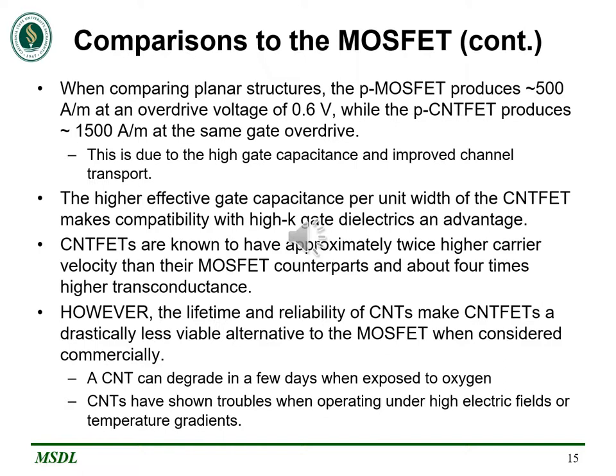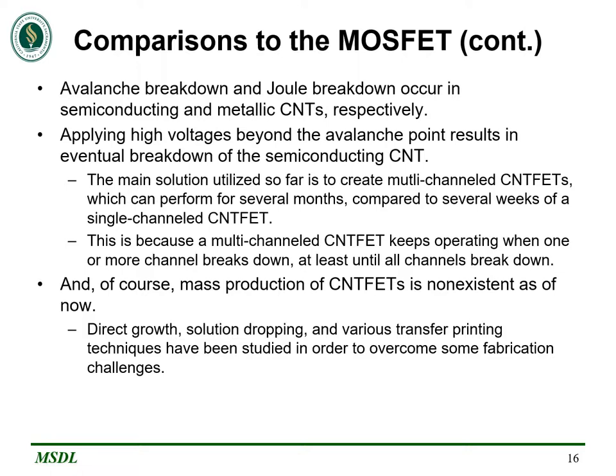A P-type MOSFET can produce around 500 amps per meter at an overdrive voltage of 0.6 volts, while a similar P-type CNT-FET can produce around 1500 amps per meter at the same gate overdrive. The higher effective gate capacitance per unit width and higher carrier velocities allow for this, along with approximately four times higher transconductance than a MOSFET. However, the main problem with carbon nanotube FETs is their reliability and lifetimes. A carbon nanotube can degrade in a few days when exposed to oxygen and can have trouble operating under high fields and temperature gradients. When applying voltages beyond the avalanche breakdown point for semiconducting nanotubes, the channel will basically be destroyed. The main solution so far is to use multi-channeled CNT-FETs, which can perform for several months — essentially a fail-safe method letting the transistor keep functioning on a new channel once an old one has broken down. Another non-negligible problem is the lack of mass production available to CNT-FETs.